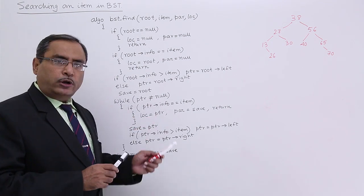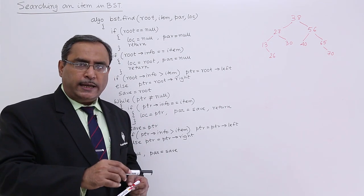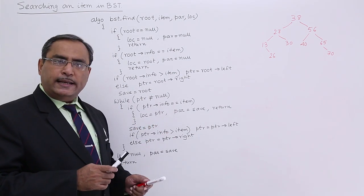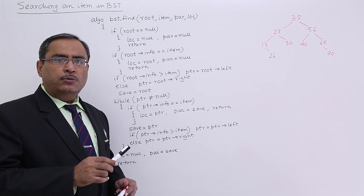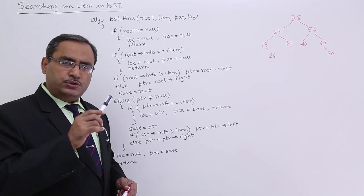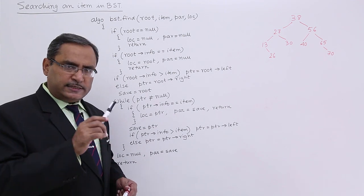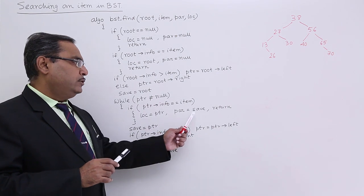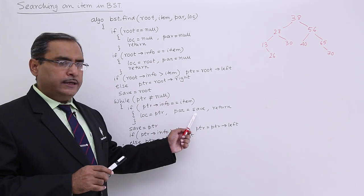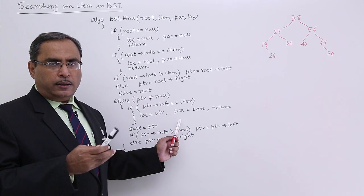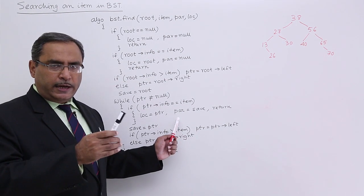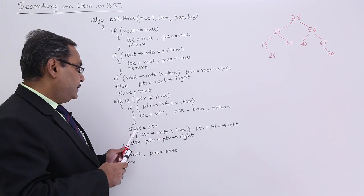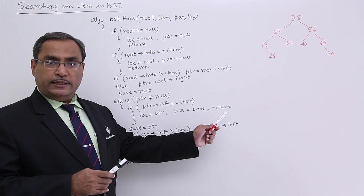While ptr is not null, ptr moves down — only ptr can become null, not save. If ptr's info equals item, that means ptr is pointing to the node whose info matches the search item. In that case, lock equals ptr, par equals save, and we return — par holds the parent node's address of lock.